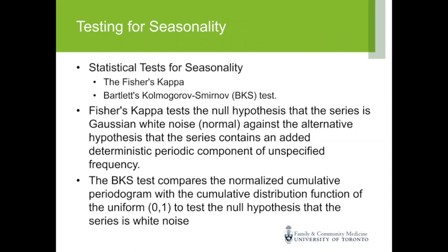One question is whether there is an informal test for seasonality — to identify if it exists and to estimate the period or frequency. There are two tests: the Fischer-Koppel and the Kolmogorov-Smirnov test. Classical statistical softwares like SAS and Stata can perform these tests and report the significance and period of seasonality if present in the data.